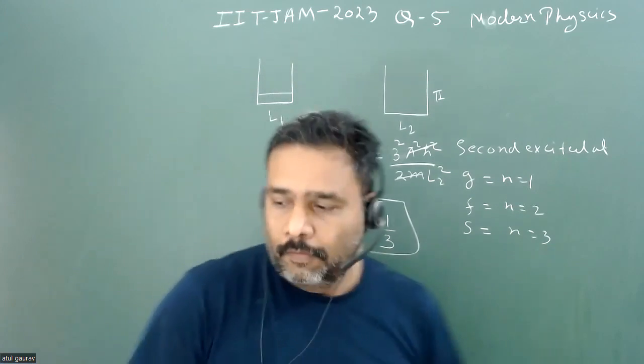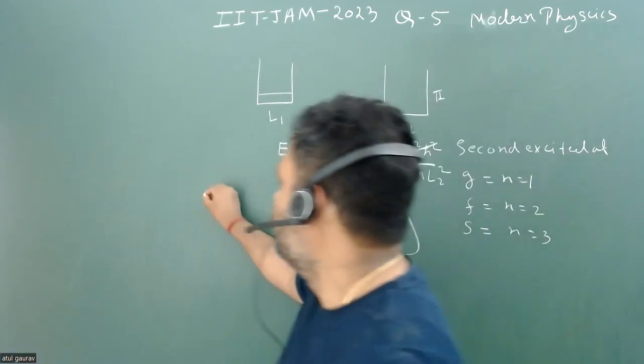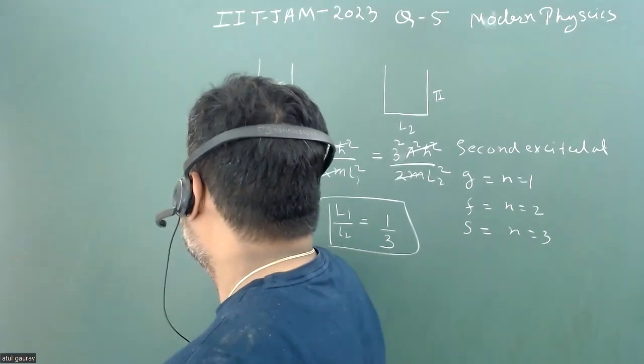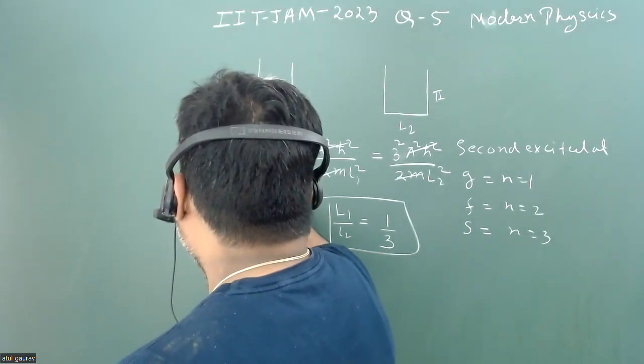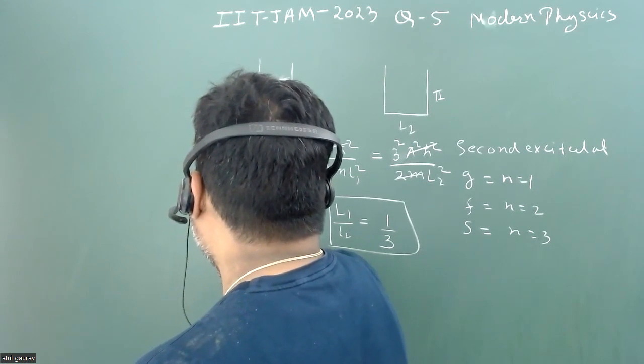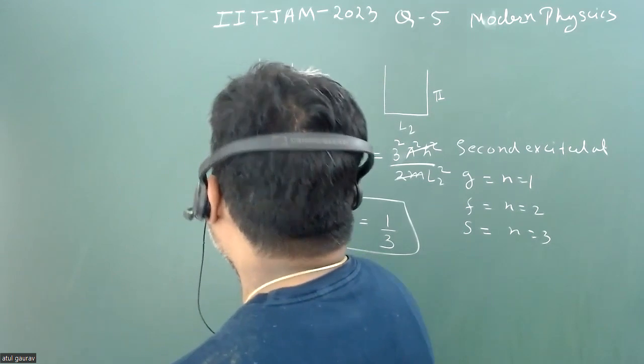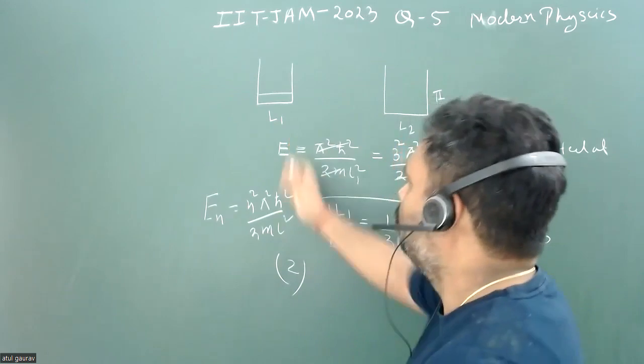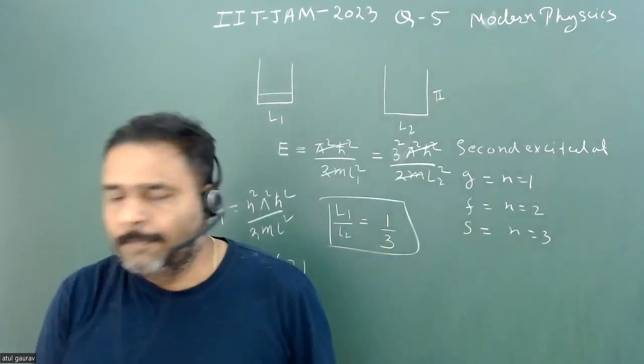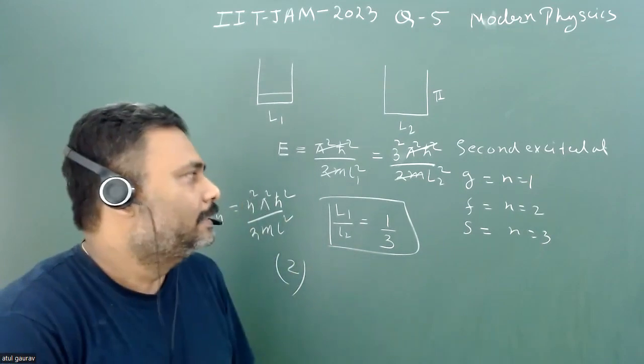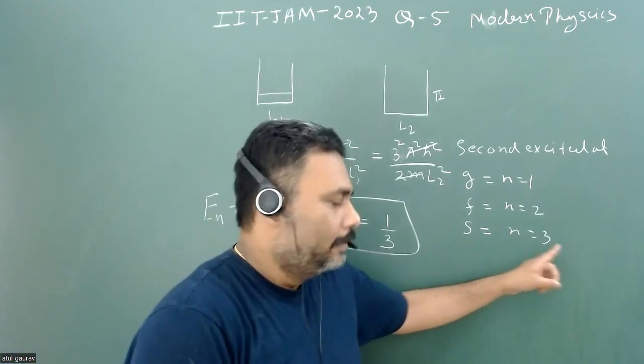We all know that energy for a particle in a box is given by En = n²π²ℏ² / (2mL²), where L is the width of the box, and this is an infinite box. This is a quite simple, straightforward problem, but the catch is there: second excited state is n=3.